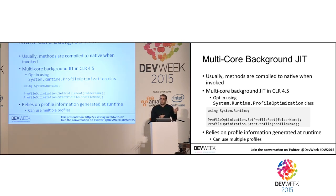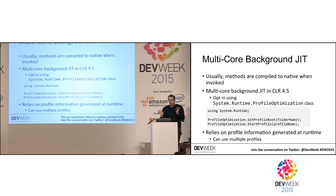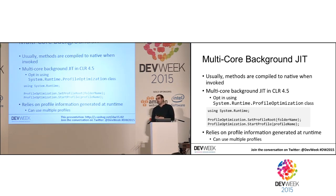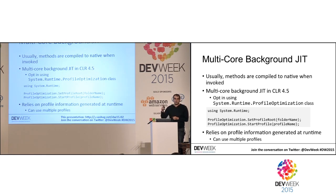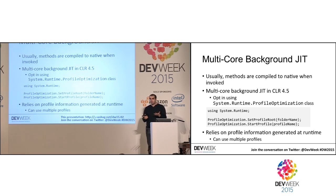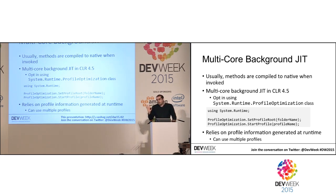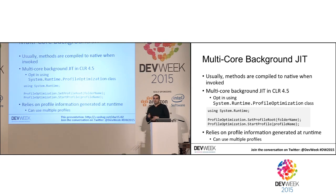Another thing added in .NET 4.5 is multi-core background JIT. Instead of waiting for a method to be invoked and then compiling it, the CLR can guess in advance which methods you're going to need and compile them in a background thread. So the JIT can run in the background while your application is starting up, compiling methods before they're called. This is enabled by default in ASP.NET 4.5, but for any other kind of application you have to opt in. It can reduce startup by a few percent, maybe a couple dozen percent in pathological cases. It does require .NET 4.5 at least.